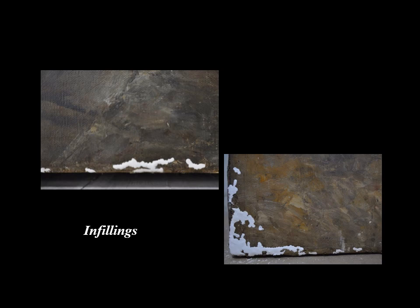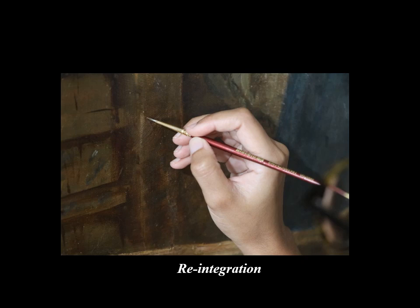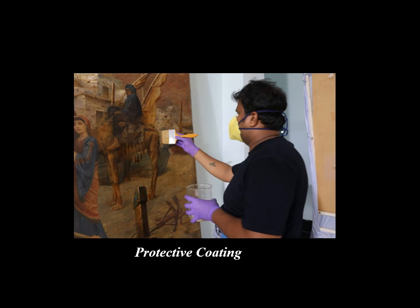The next step was the filling of losses using conservation-grade inert material with a suitable adhesive. Further, reintegration of the painting was carried out. Finally, a protective layer was applied to the painting.